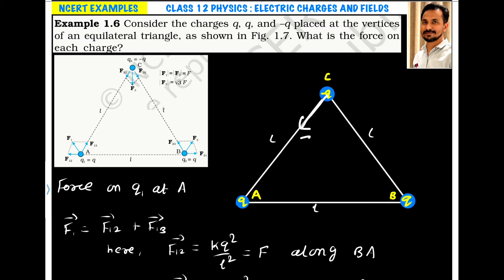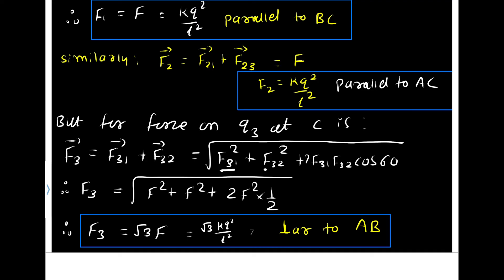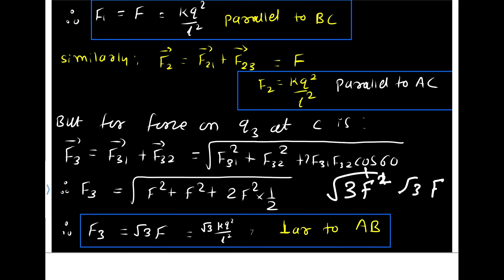Both forces F31 and F32 are equal, each equal to F. The angle between these two forces is 60 degrees. Using the vector addition formula: F squared plus F squared plus 2F squared times cos 60. Cos 60 is one half, so the 2 cancels, giving 3F squared. Taking the square root gives root 3 times F. So the resultant force on charge at C is root 3 times KQ squared by L squared.